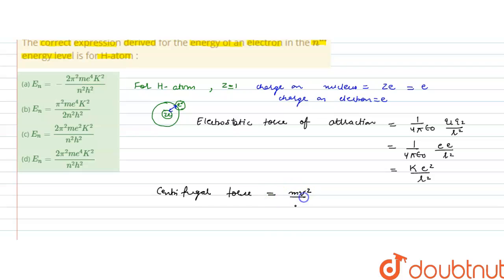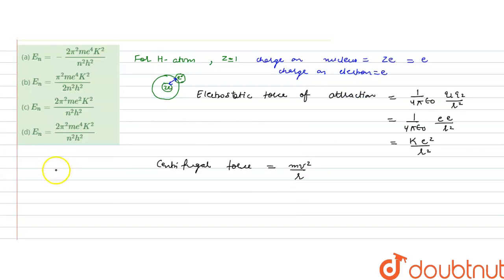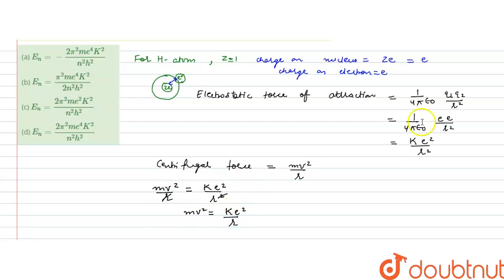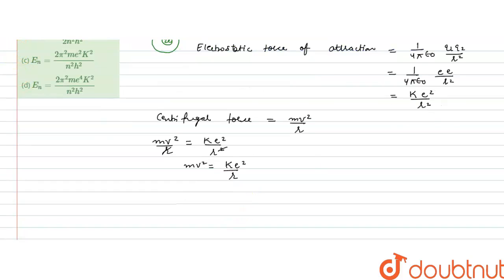The centrifugal force is mv²/r, where m is the mass of the electron moving with velocity v at radius r. Setting centrifugal force equal to electrostatic force: mv²/r = ke²/r². This r cancels, giving us equation 1: mv² = ke²/r.